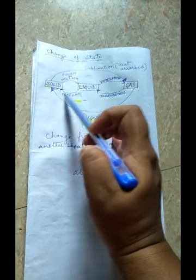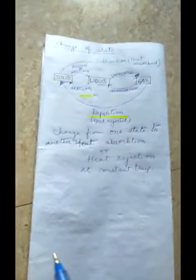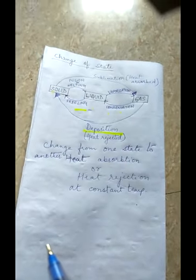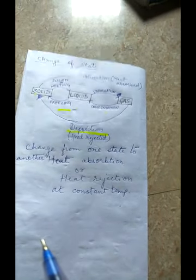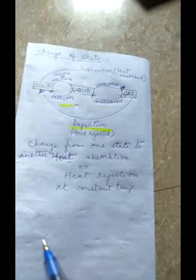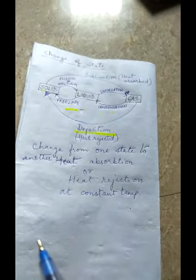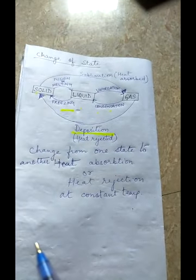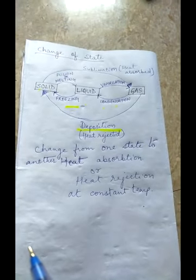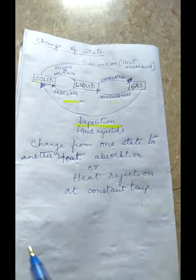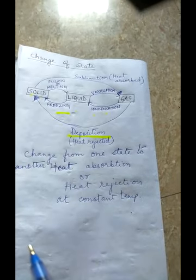The freezing point and melting point are the same for a given substance. For water, ice starts melting at 0°C and water starts freezing into ice also at 0°C. So for any substance, the melting point and the freezing point are the same.